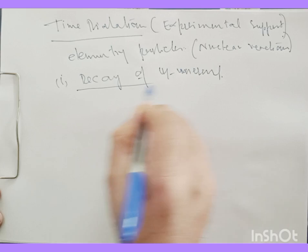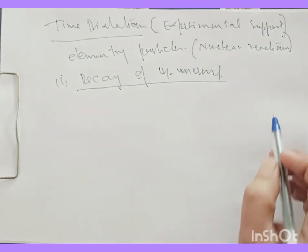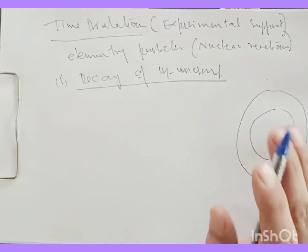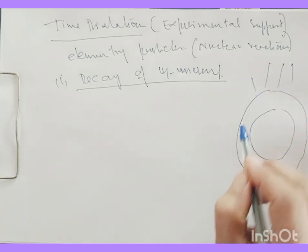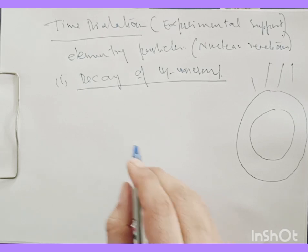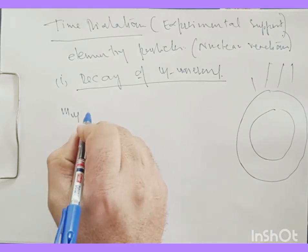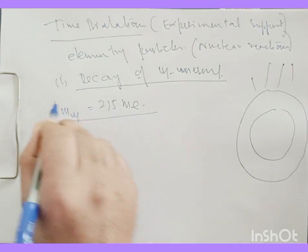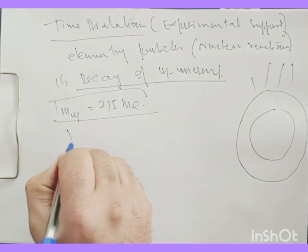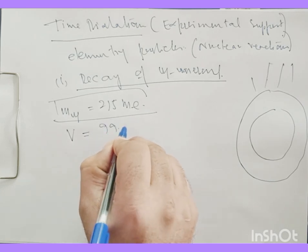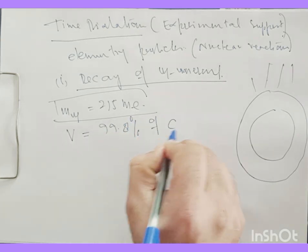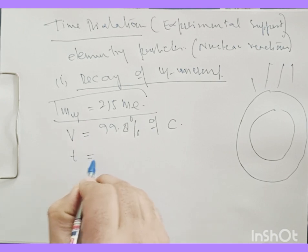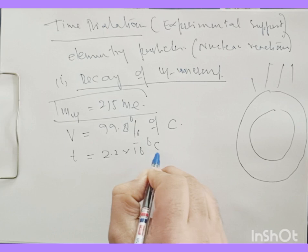These mu mesons are produced in the upper portion of the Earth's atmosphere by virtue of the showers of cosmic rays coming from the outer universe. The mass of mu mesons is 215 times the mass of the electron. They can move with a velocity of the order of 99.8% of the velocity of light. Their lifetime, if we take that as t, is nearly 2.2 times 10 to the power of minus 6 seconds.